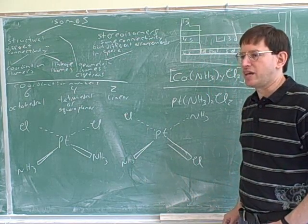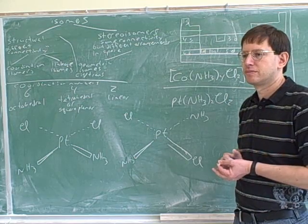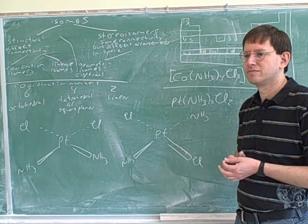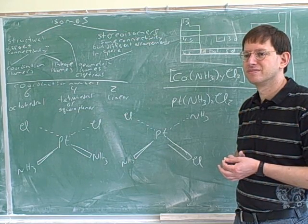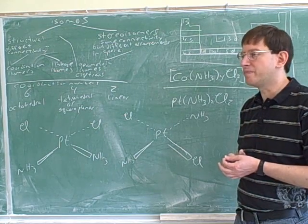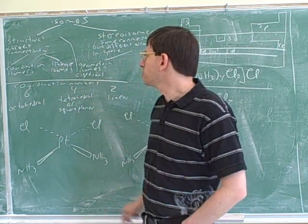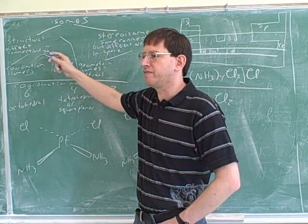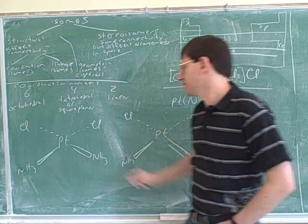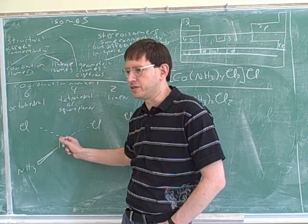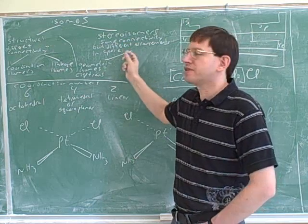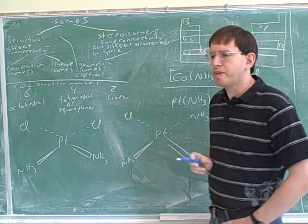There's no way you can rotate these so they would look the same. What type of isomers do we have here? Geometric isomers. They're not linkage isomers — those would be structural isomers with different connectivity. These have the same connectivity: this platinum is connected to two chlorines and two ammonias, and so is the other. So they're not structural isomers. They have the same connectivity but different arrangements in space. So these are geometric isomers.